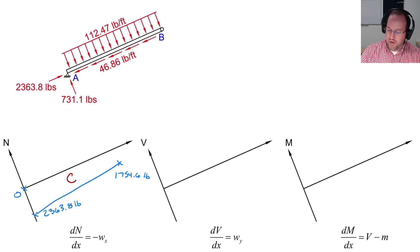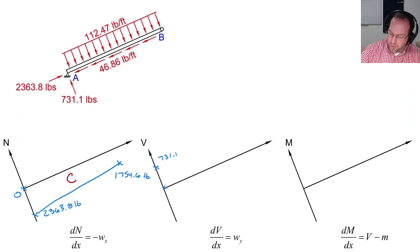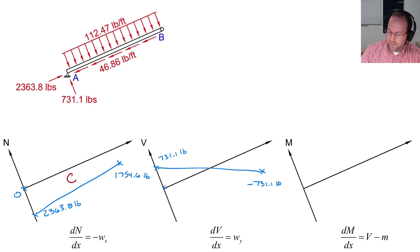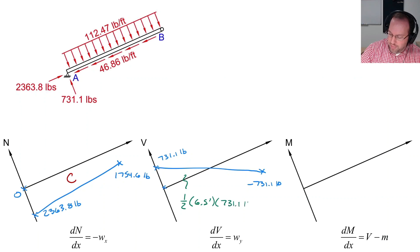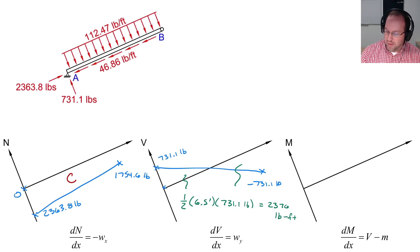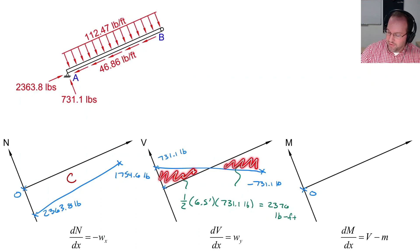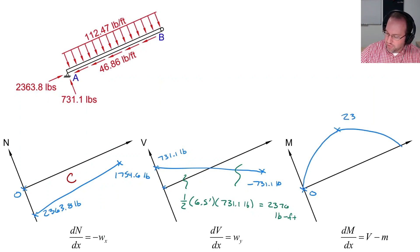For the shear diagram, we start with the concentrated shear force of 731.1 pounds upward, then apply a negative slope of 112.47 lb/ft, ending at −731.1 pounds at B. Checking the area of each triangle: one-half times base (6.5 feet) times height (731.1 lb) gives an area of 2376 lb·ft. Both triangles have equal and opposite areas. The moment diagram therefore starts at zero, forms a parabola peaking at 2376 lb·ft, and returns to zero, with the top fiber in compression and the bottom in tension.